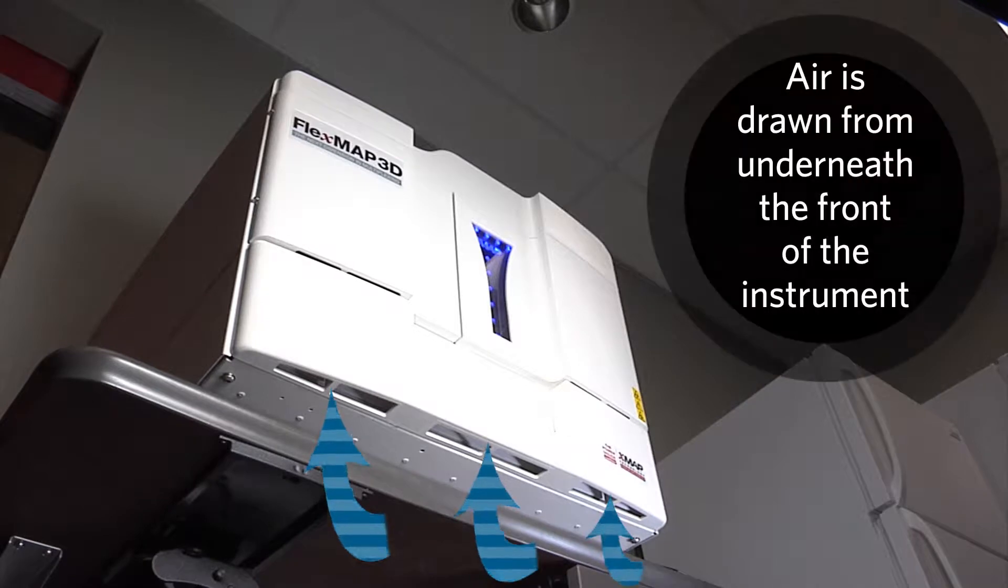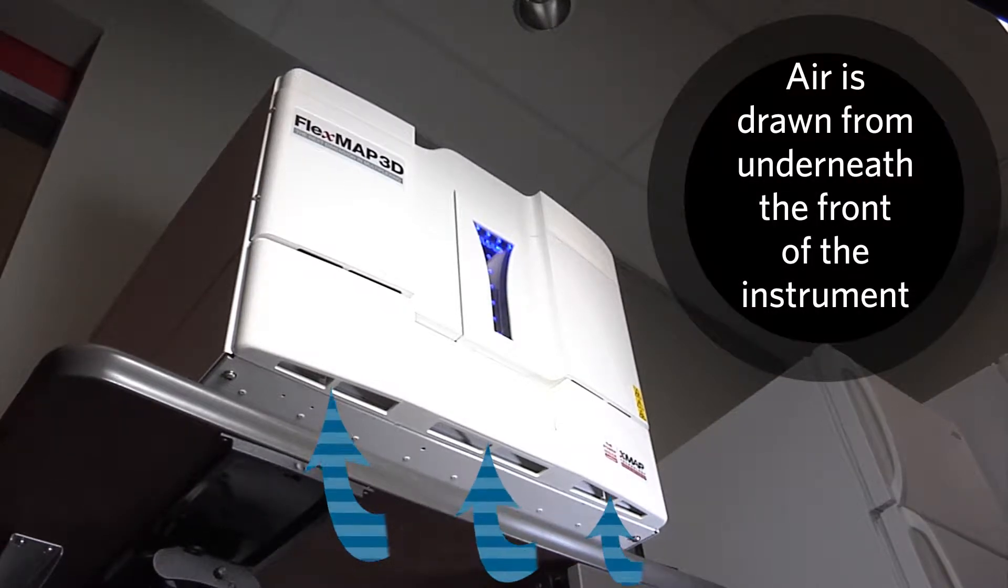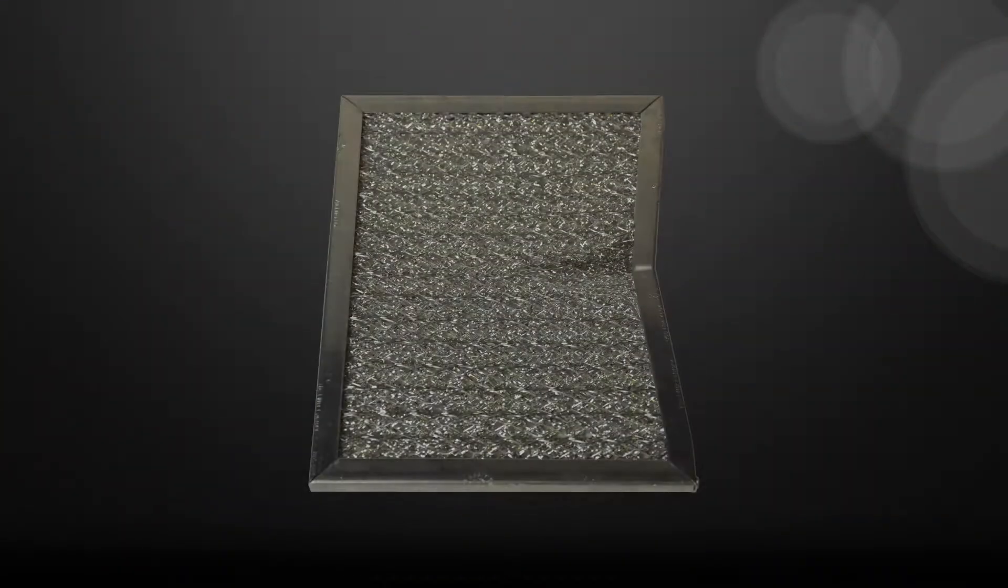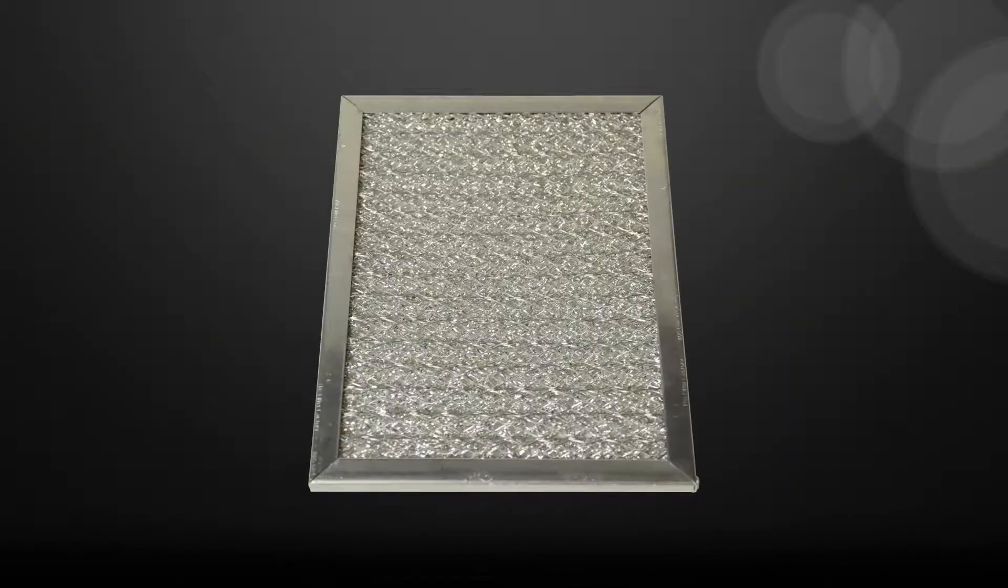The air is drawn from underneath the front of the FlexMap 3D through ventilation shafts that lead the air through the filters before going into the instrument. If damaged, the air ventilation filters may be replaced.